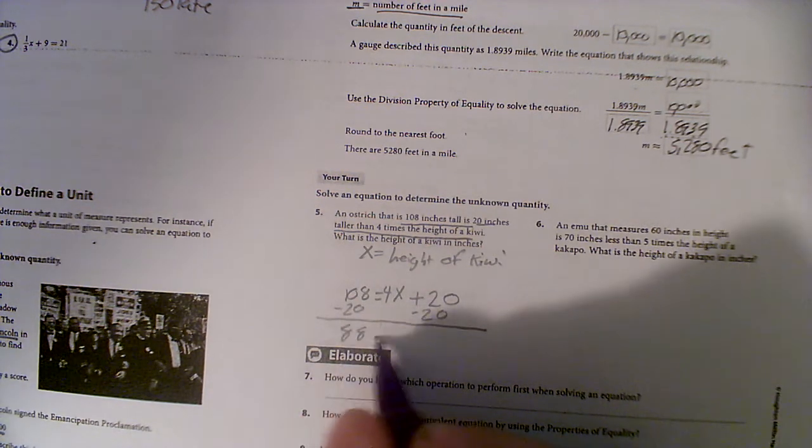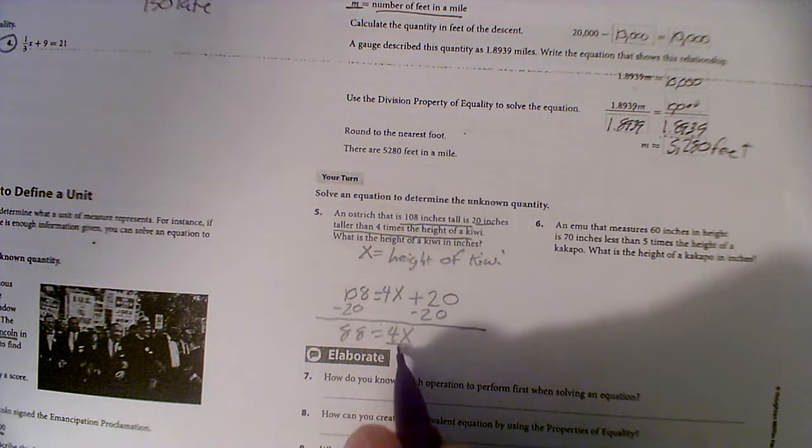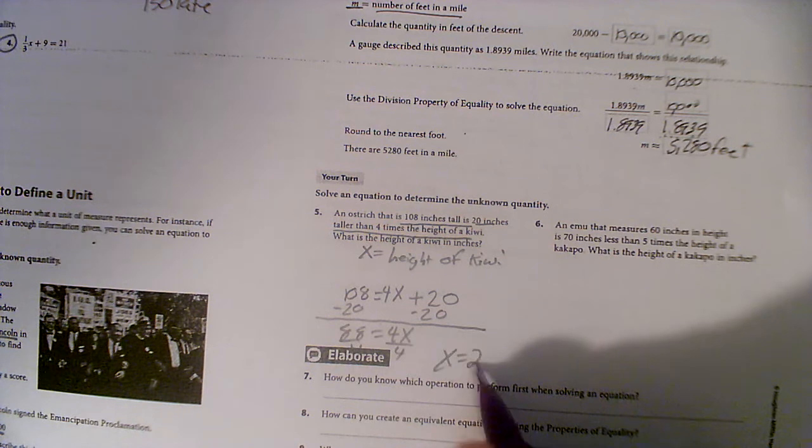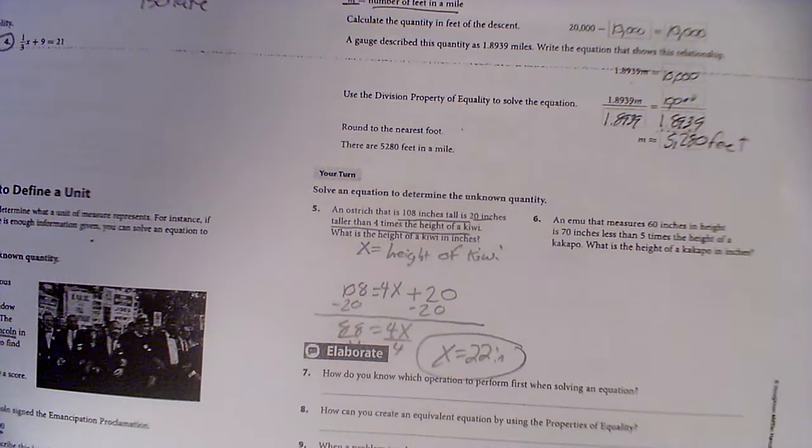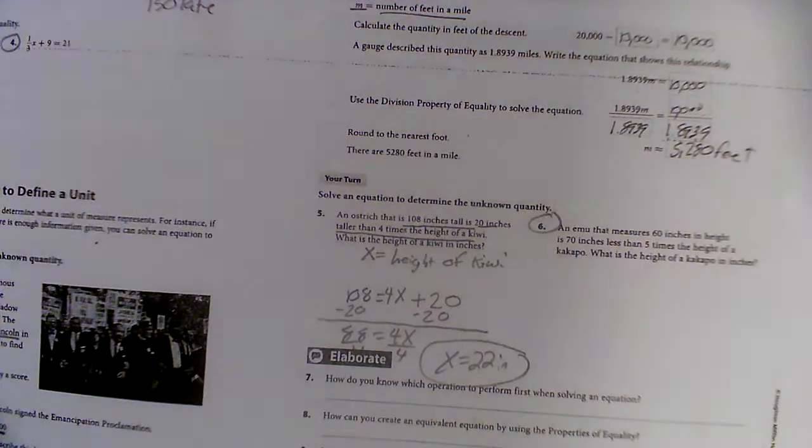What I get is 88 is equal to four times the kiwi. That's multiplication, so we're going to divide by four, and that'll tell us the kiwi is 22 inches tall. Kind of cool, huh? All right, so I'm going to leave this one for you to try.